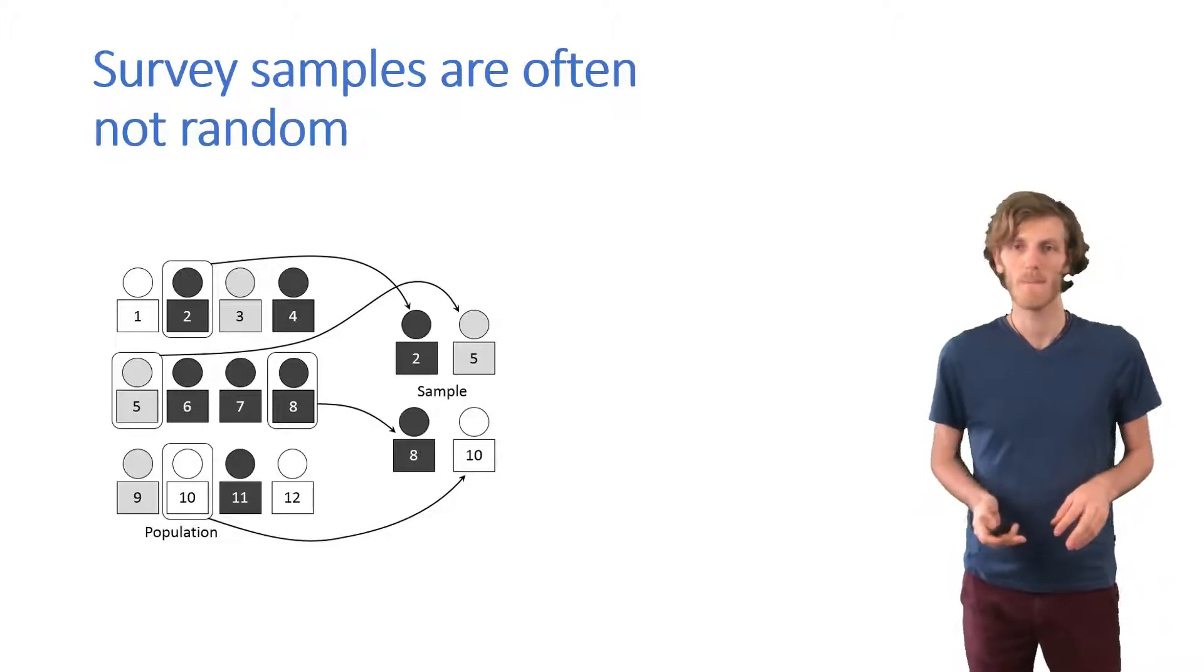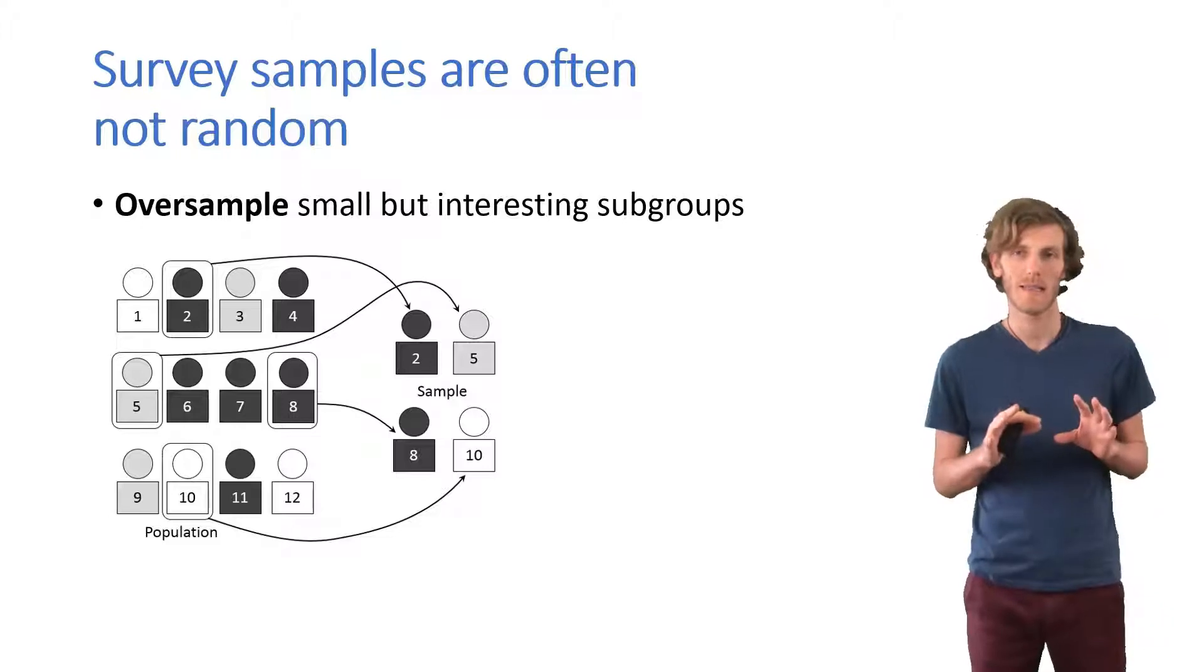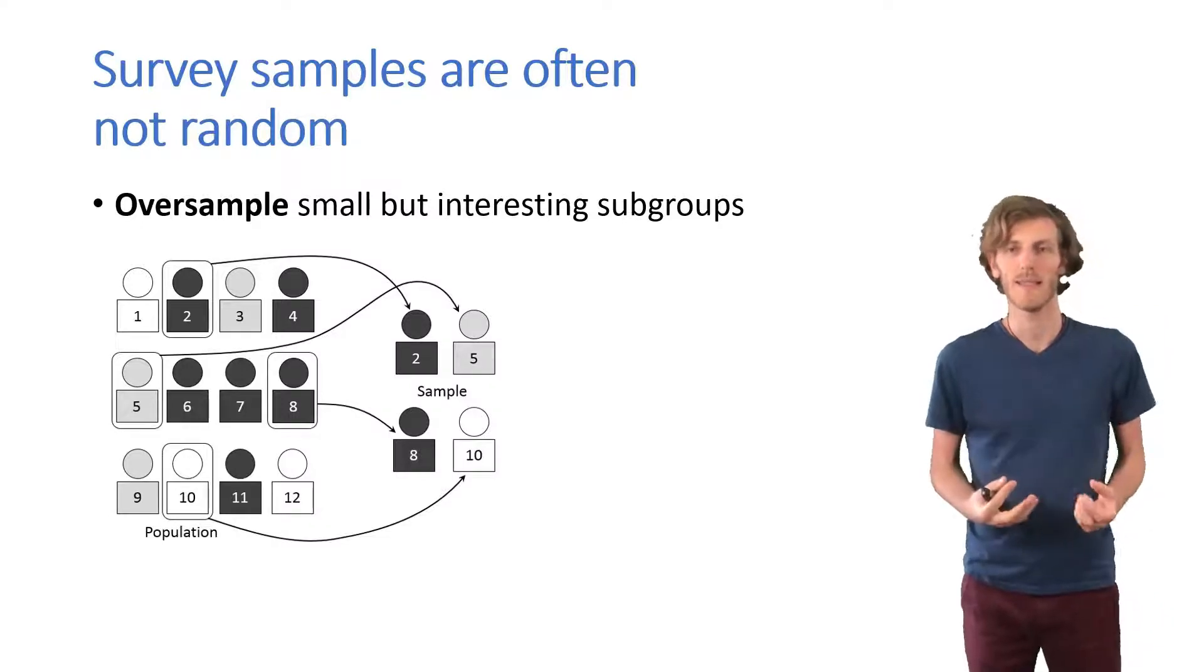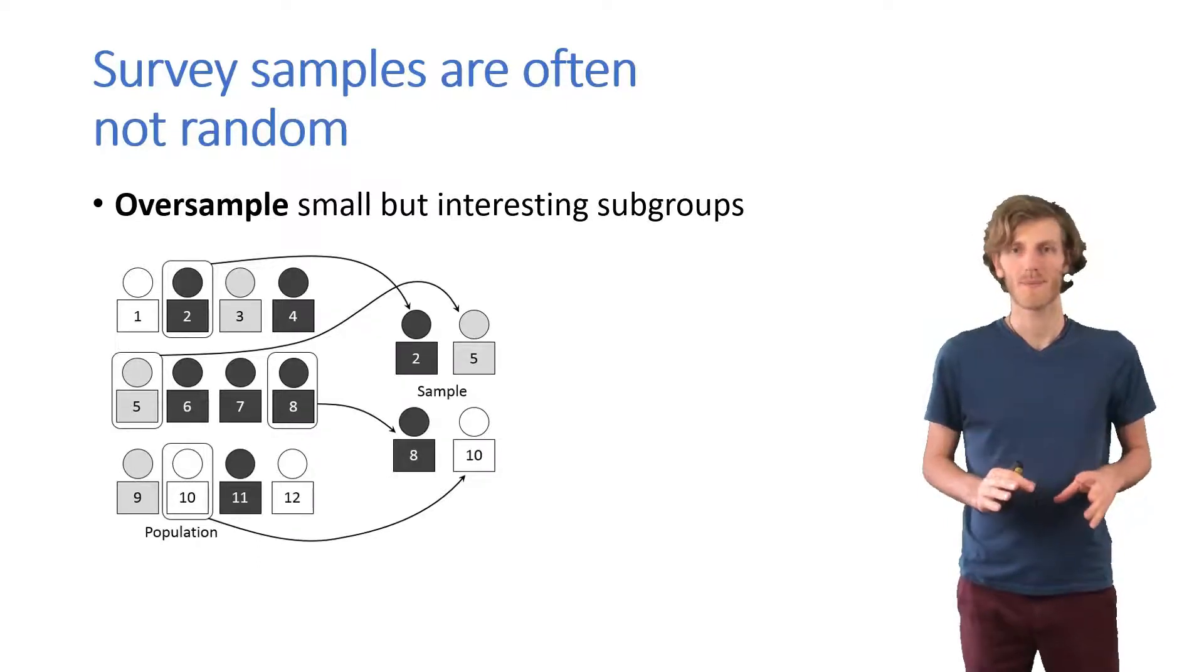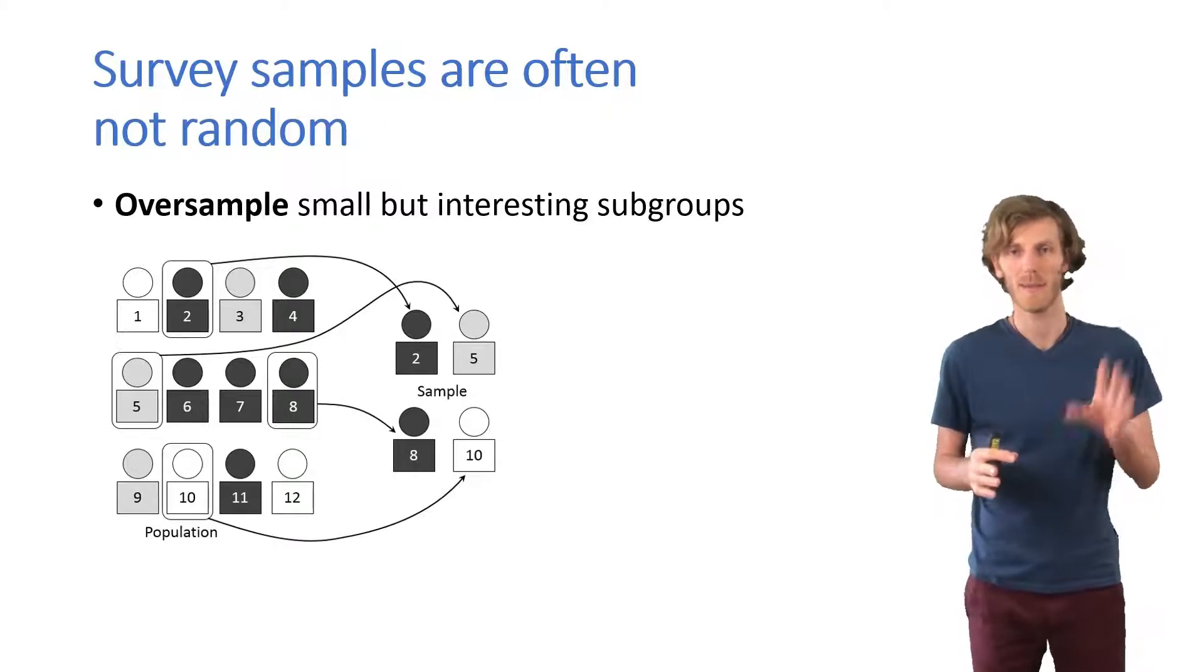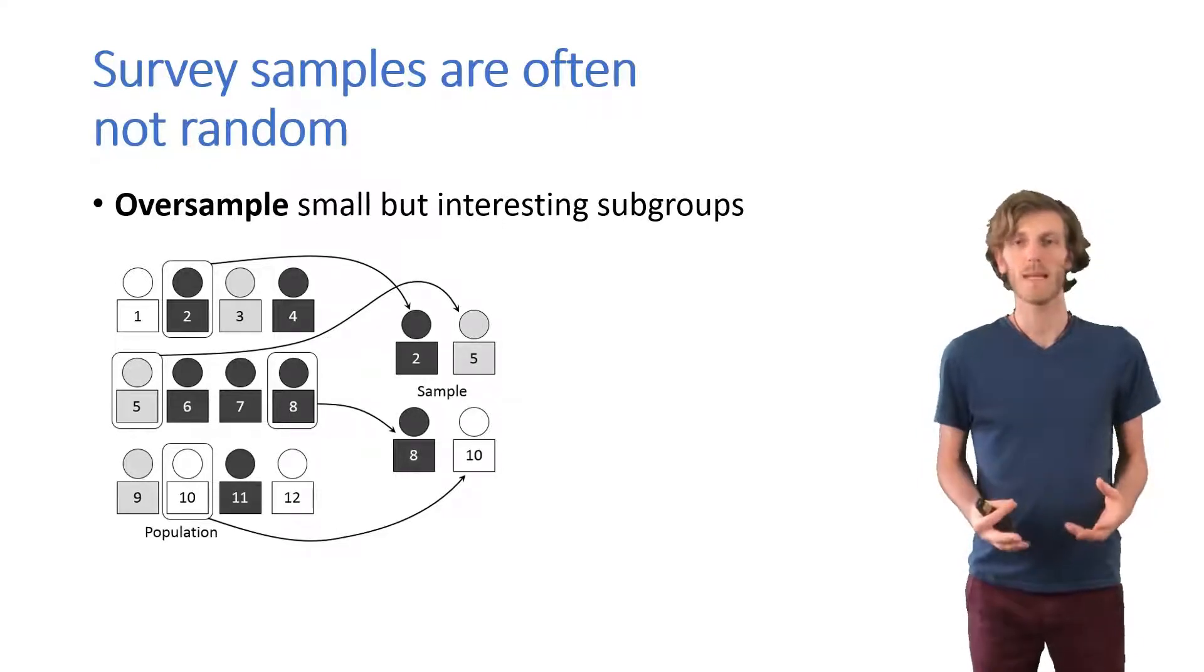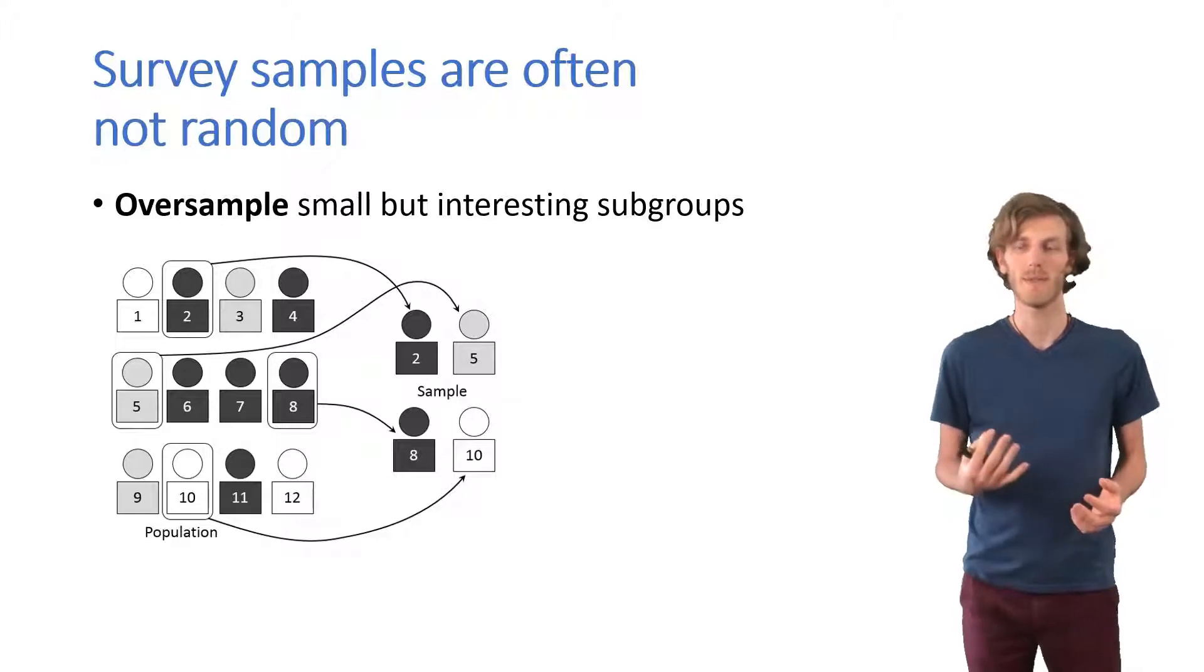Usually they don't and often they don't because the survey designers, the researchers, oversample on purpose. They might say there's some small group, maybe the gray people in this graphic, some small group that's really important. If we just sample randomly, we won't get enough of them to make good estimates about the subgroup.